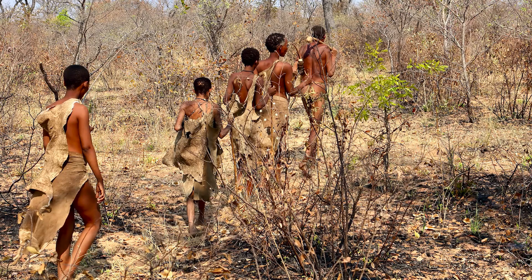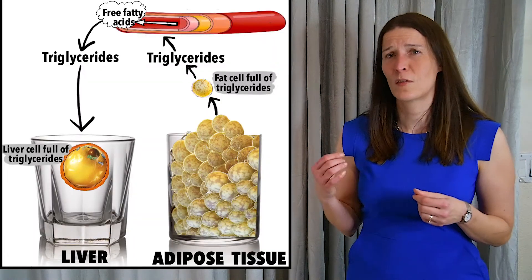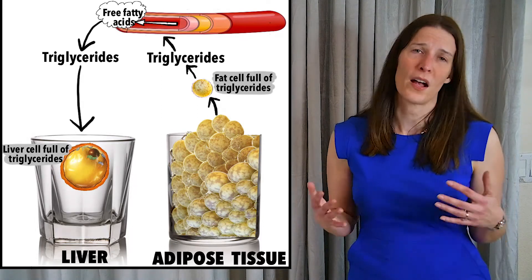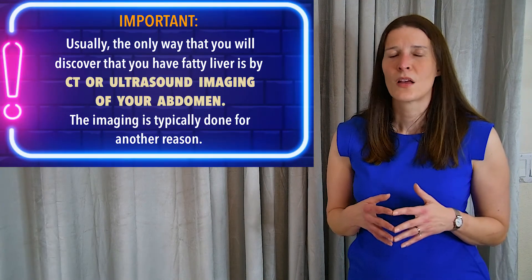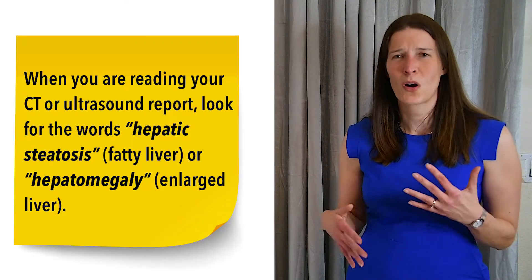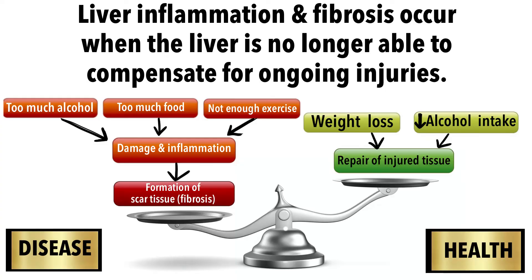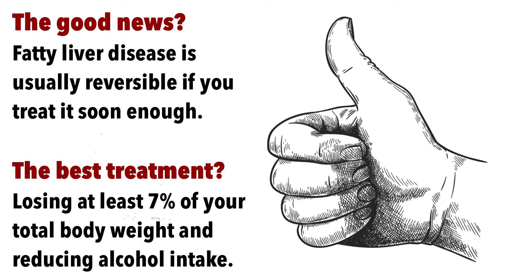Homo sapiens have not evolved to tolerate today's processed diet, which is high in sugar and fat. All this excess energy that we consume is stored as fat in the body, as this is the most efficient way for the body to store calories. Once the amount of body fat exceeds the storage capacity of adipose tissue, it is deposited in the liver, causing fatty liver disease. The liver tries over and over again to repair itself by making scar tissue, and if too many healthy liver cells are replaced, the liver no longer works well — leading to cirrhosis and liver failure over time.